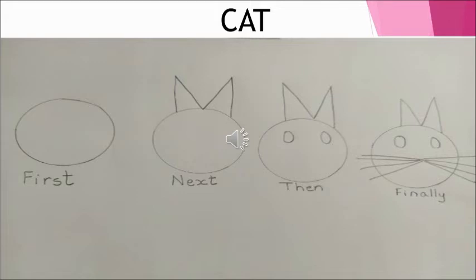So now when you are drawing the cat you have learnt a few words. Can you tell me? First, what did you draw first? A circle. Then next, what did you draw? The ears — the cat ears. And then what did you draw? The cat eyes.